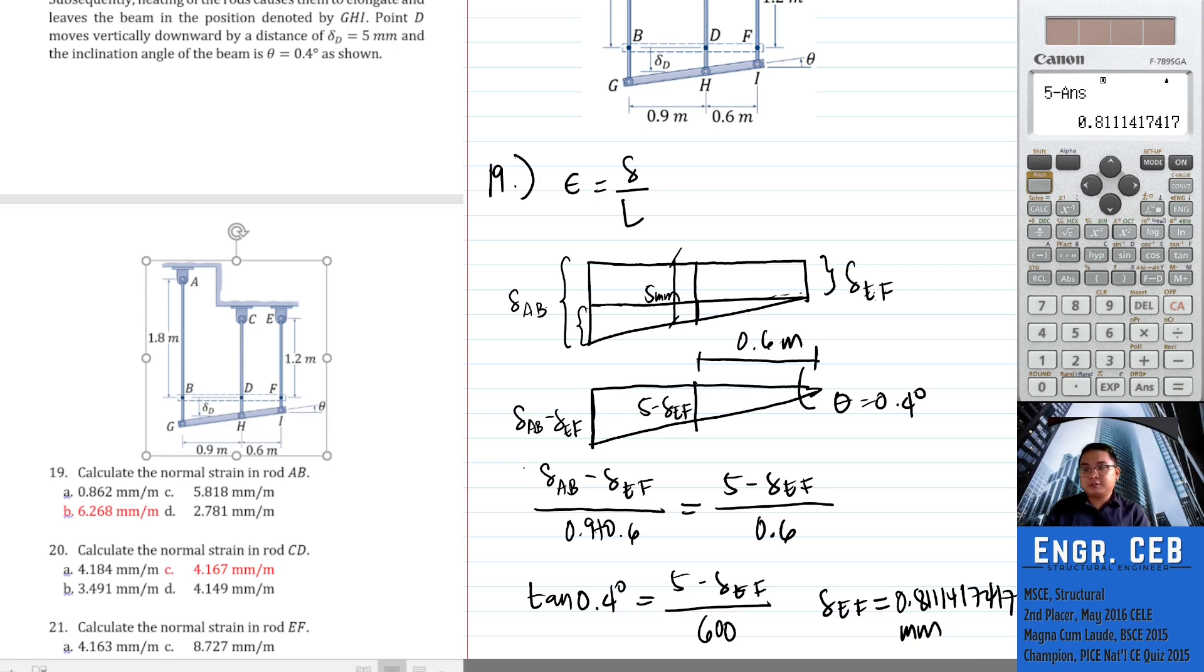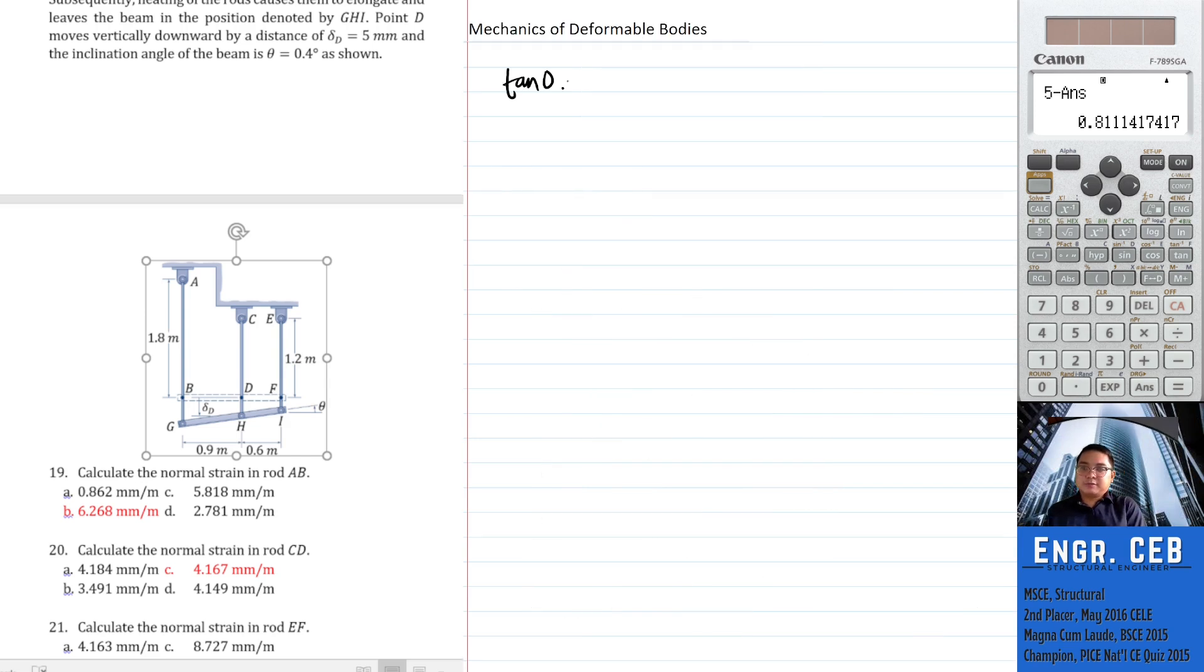Once you have EF, you can substitute it in this equation to get the deformation of AB. Or use the trigonometric function again: tangent 0.4 degrees equals deformation AB minus deformation EF all over 900 plus 600. Or use our ratio and proportion. Substitute EF here, and we can compute the deformation of segment AB. The deformation of segment AB is 11.2832873.